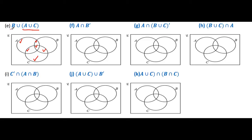Now we have to identify region B. This area belongs to B, this also belongs to B, this also belongs to B, and this also belongs to B. Now there is union between them. When there is union, we shade both single tick and double tick. So we shade all regions where double tick and single tick are present — this is our desired region.